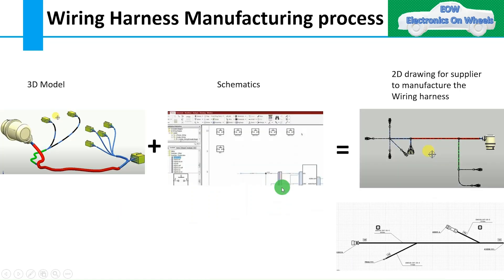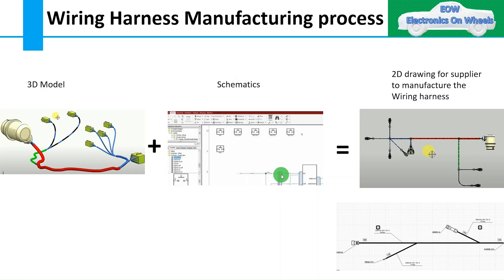So now we have discussed almost all the child components of wiring harness. Our next task is how to assemble them and design the wiring harness. To design any wiring harness, you need to have a 3D model routed with all the child components as per requirement in the 3D model or DMU — digital mock-up. To route the wiring harness with connectors and components, you require schematics information, which will help you define the to-and-from connection, number of cavities in the connector, and wire cross-section, which helps decide the bundle diameter. So schematics plays a vital role in routing any wiring harness. Once you have the 3D model and schematics ready, by integrating the 3D and schematics data you can create a 2D drawing, which will be given to the supplier to manufacture the wiring harness.